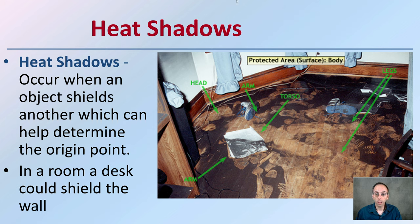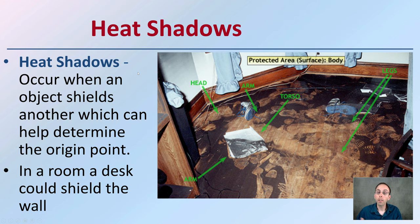When looking at an area post-burning, we could notice a potential for heat shadows. A heat shadow occurs when an object shields another, which can help determine the point of origin — for example, a desk shielding a wall. Here we see evidence of where a person may have been laying: evidence of their legs, torso, arm, and head region, and the heat shadow left behind due to the body physically blocking some of that fire from progressing to certain areas.